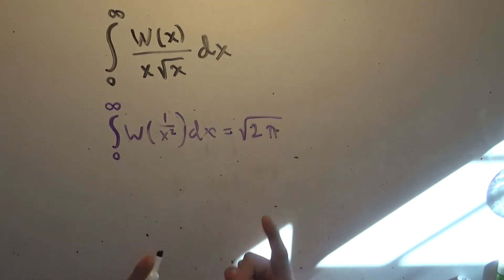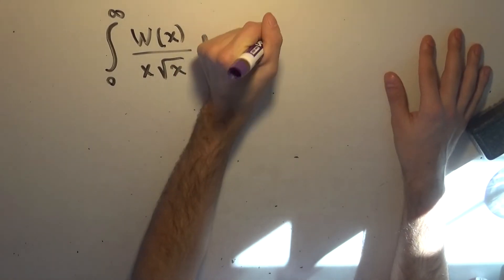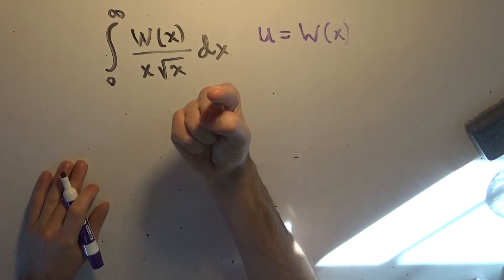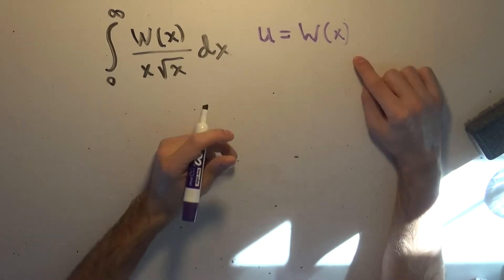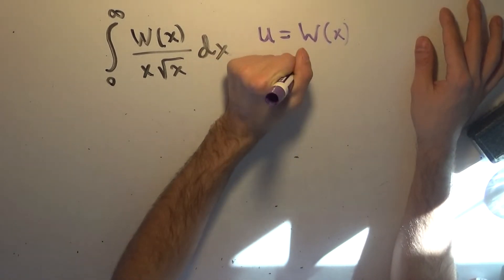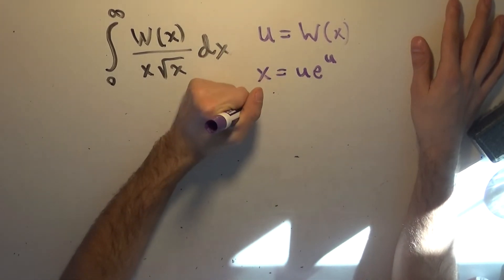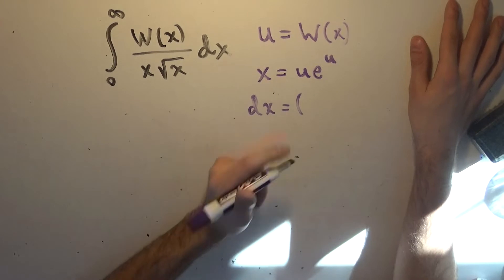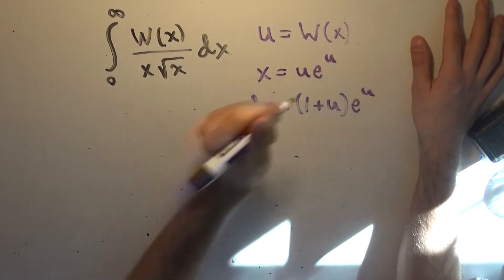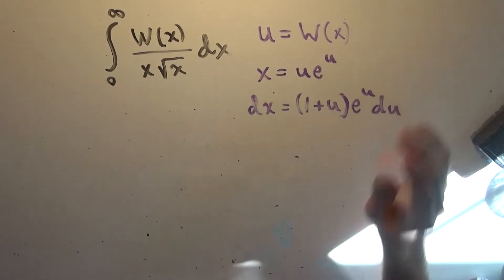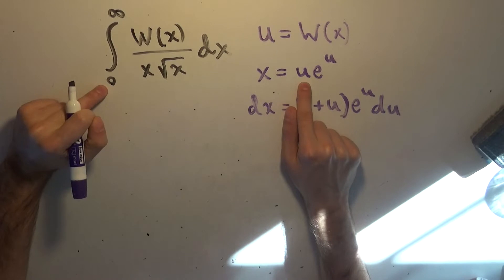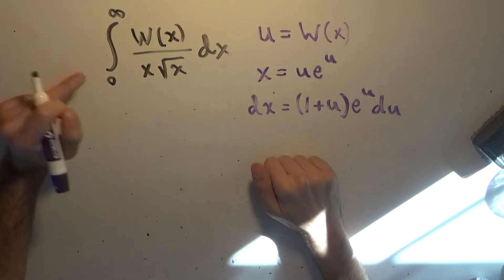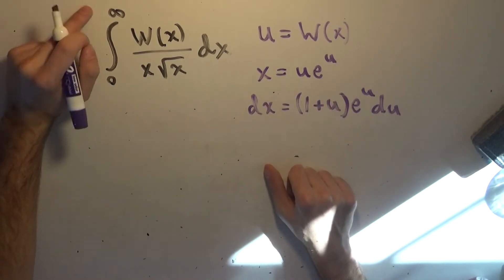We're going to make a neat little substitution and say that u equals W(x). Using the definition of inverse functions and the Lambert W function, that tells us that x equals u times e to the power of u. Differentiating both sides and applying the product rule, we get dx equals 1 plus u times e to the power of u, du. For the bounds: plugging in 0 for u gives 0 times e to the 0, which is 0. And if we want x to be infinity, u just has to be infinity as well. So the bounds of the integral don't change.